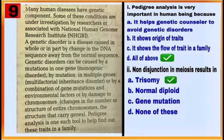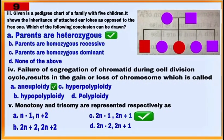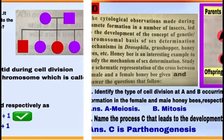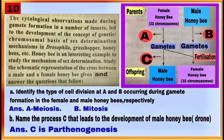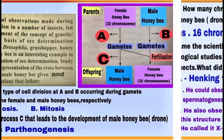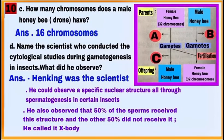Case-based question number 9 is based on causes of genetic disorders. Read the paragraph and answer questions 1, 2, 3, 4, and 5. Case-based question number 10 provides information about ways of sex determination in honey bees; answer questions A, B, C, and D.